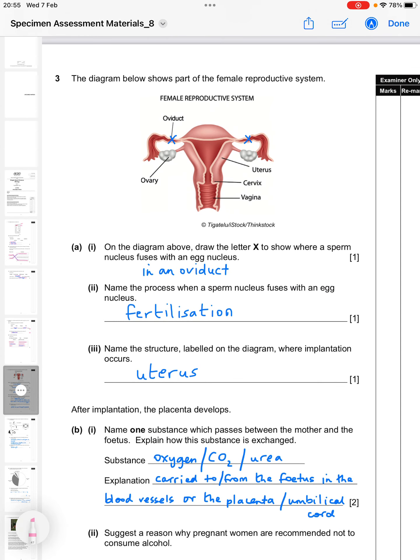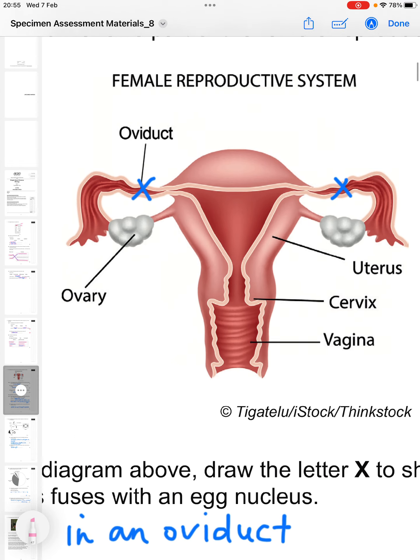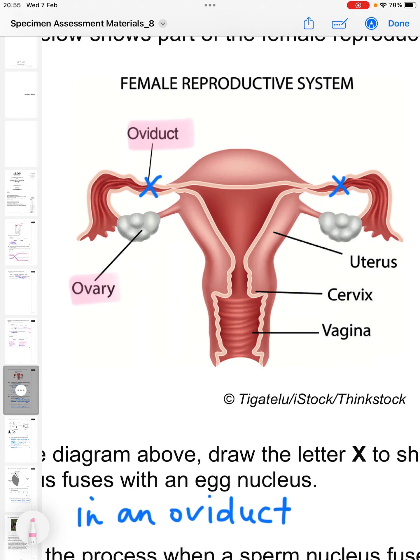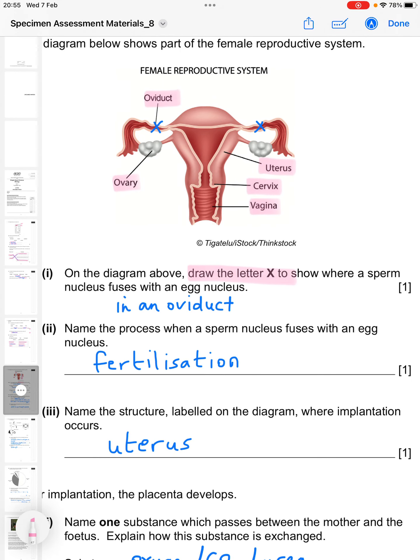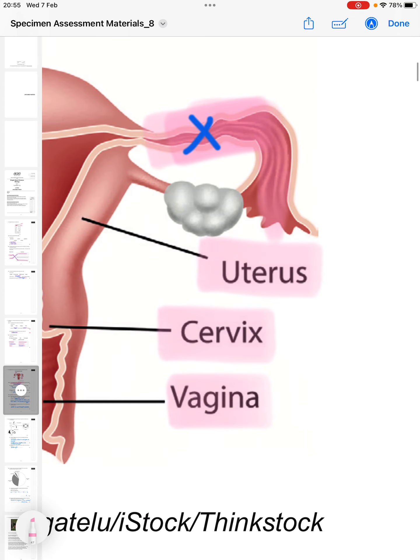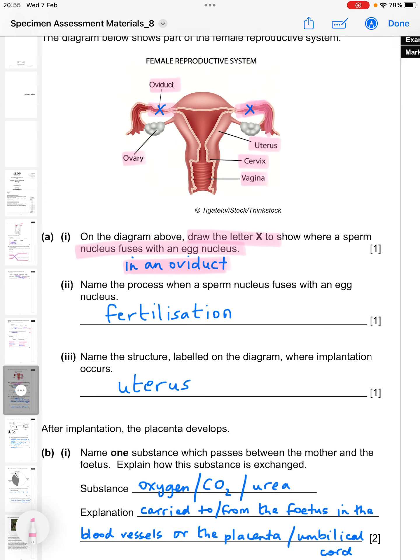Number three. The diagram shows part of the female reproductive system. If we just have a look at it here. We have the oviduct, the ovary, the uterus, the cervix, and the vagina are all labeled. Ignore the blue X's, they'll come up in a second. So then it says on the diagram above, draw the letter X to show where a sperm nucleus fuses with an egg nucleus. So that has to be in an oviduct. So either one of the oviducts. And as long as your X was anywhere along the length of one of the oviducts, then you would have got a mark there.